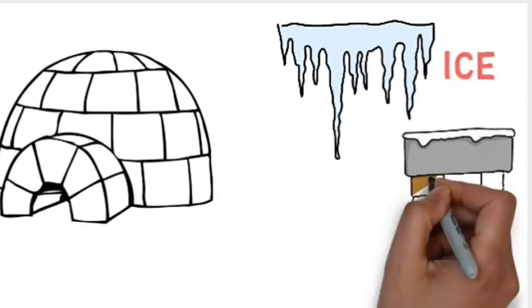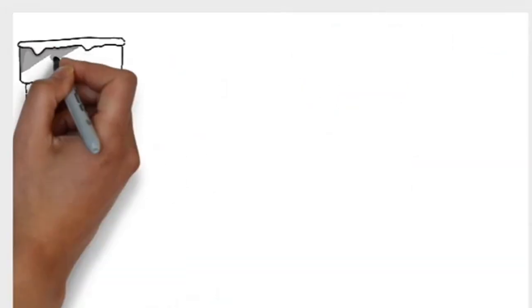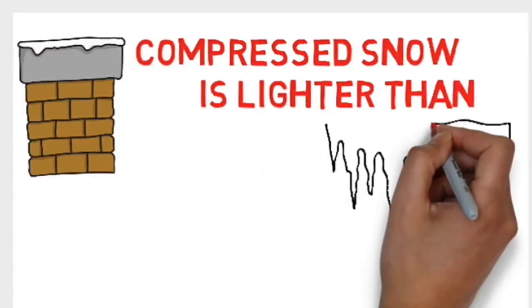Now igloos are not built primarily from ice blocks but from blocks of compressed snow. Not only is compressed snow lighter than ice, it is a superior insulator.